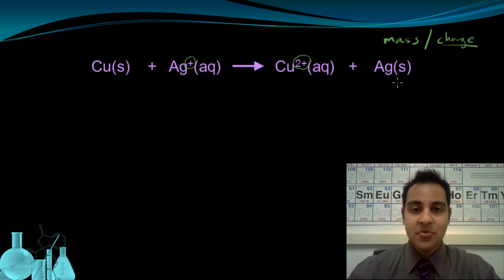Now this is a pretty simple reaction to balance, but we're going to use it to demonstrate a process called balancing by oxidation number. So if I'm going to be balancing by oxidation number, I need to identify the oxidation numbers of everything involved.